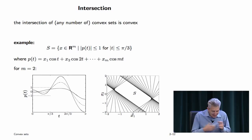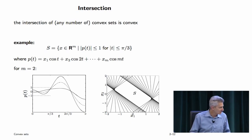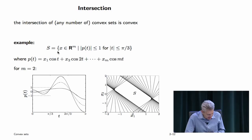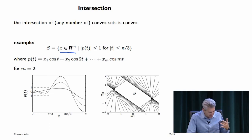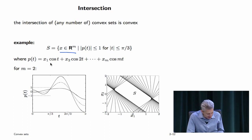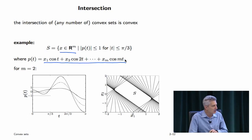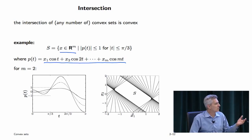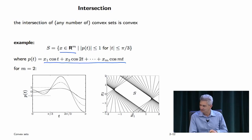The first operation: intersection. The intersection of any number of convex sets — finite, infinite, or uncountable — is convex. Here's an example. Let S be the set of vectors in R^m for which the trigonometric polynomial p(t) = x1*cos(t) + x2*cos(2t) + ... + xm*cos(mt) satisfies |p(t)| ≤ 1 for all |t| ≤ π/3.